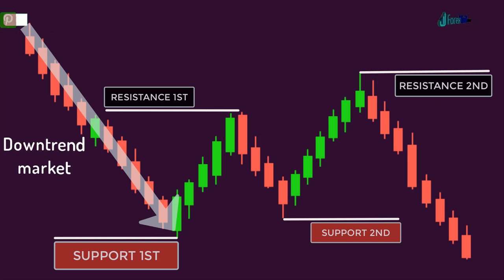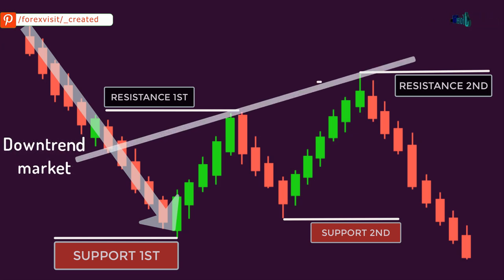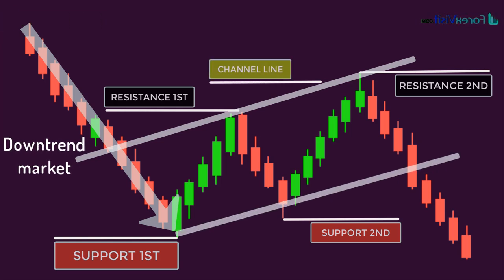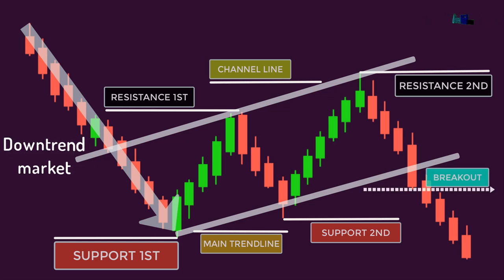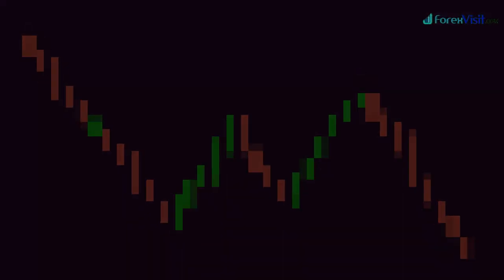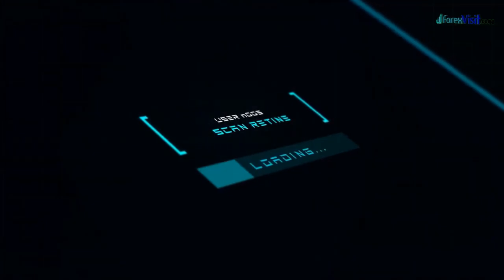We draw a trend line touching the highs of both resistances — this is called the channel line. Then we draw another trend line touching the lows of both supports — this is called the main trend line. In a bearish continuation channel pattern, at least two resistances and two supports must form, and both trend lines must be parallel. When the price breaks below the support line, the pattern is completed and the bearish trend resumes. At breakout, volume also starts increasing.